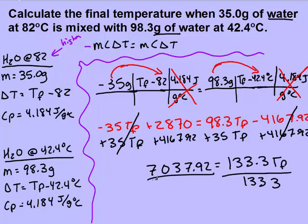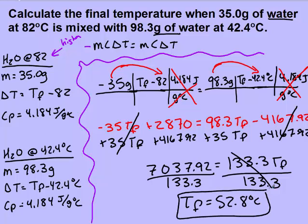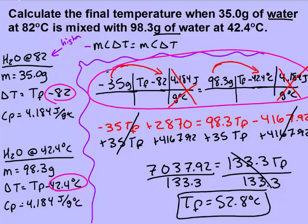Isolate the variable. Make sure that your final temperature is between your two initial values — it's between 82 and 42.5, so that looks good. And if you're unsure of your algebra, you can always plug it back into your original equation and both sides should equal or come very close to equaling each other.